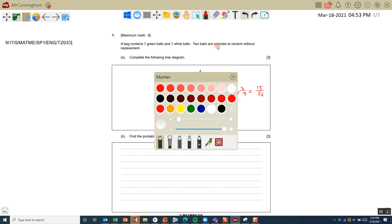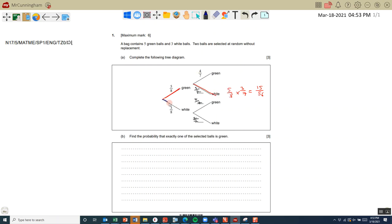Or we could have a white one followed by a green ball, which would be 3/8 multiplied by 5/7, which equals 15/56.